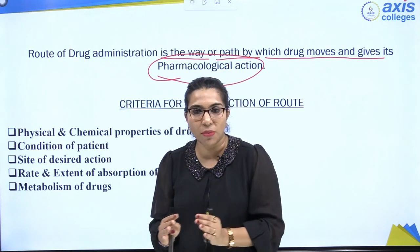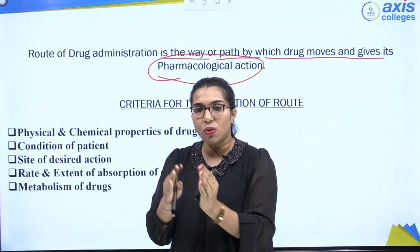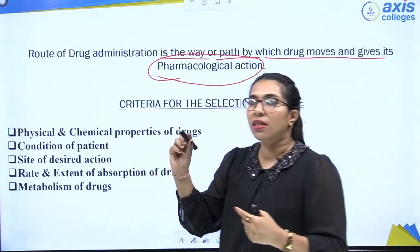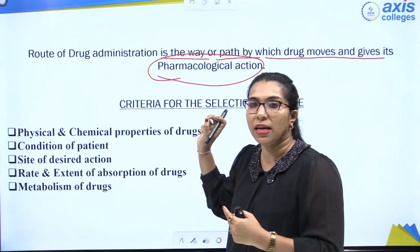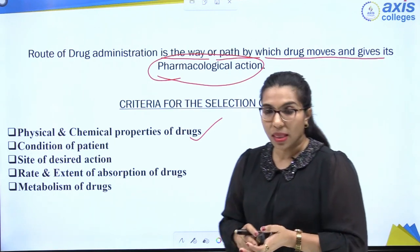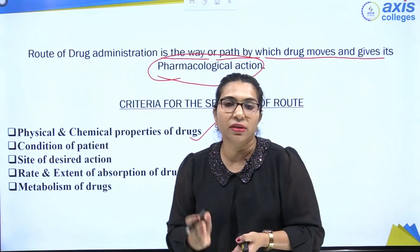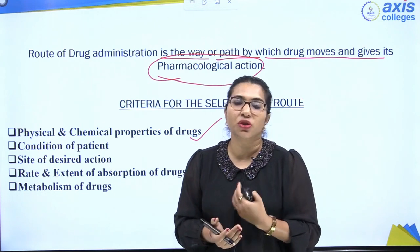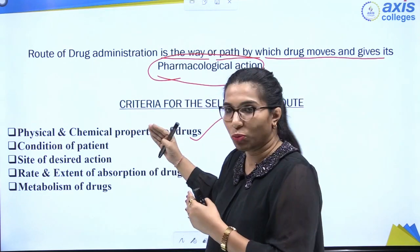Before proceeding to the various routes of drug administration, there are a few criteria that decide which route should be used for a given drug. The first important criterion is the physical and chemical properties of the drug — for example, viscosity, stability, disintegration power, and chemical properties like whether the drug is acidic or basic, ionization factors, chelation factors, etc.